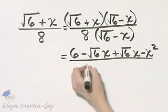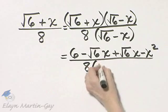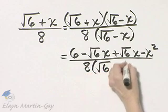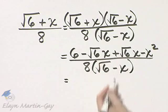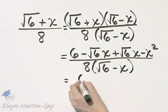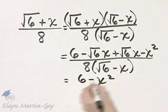And then I have in the denominator, still 8 times square root of 6 minus x. So what do we have in the numerator? The middle terms subtract out and I have 6 minus x squared.